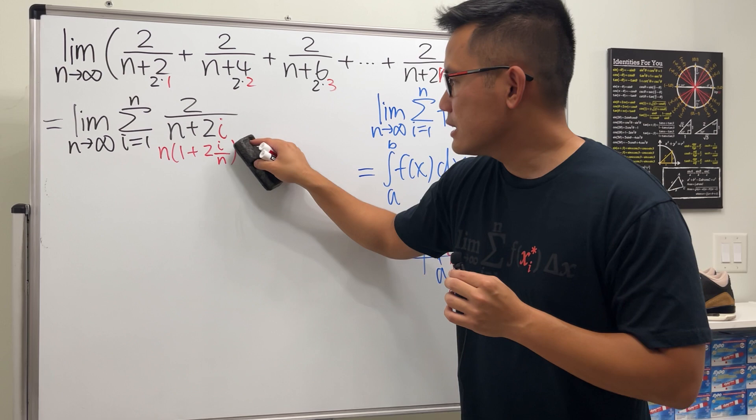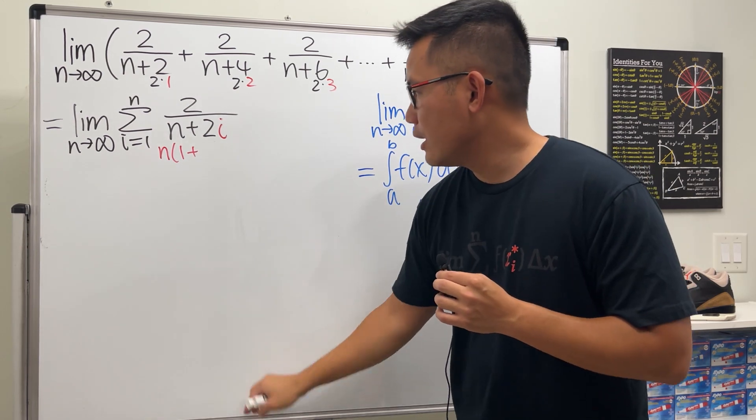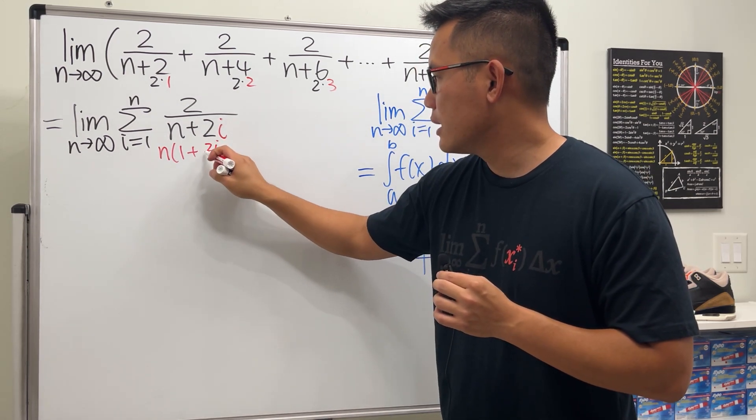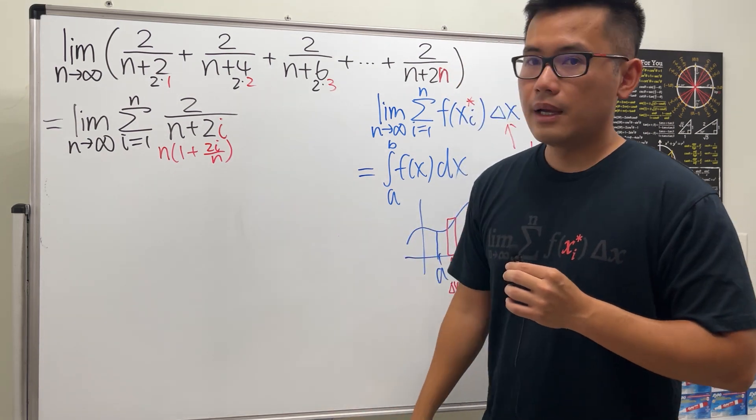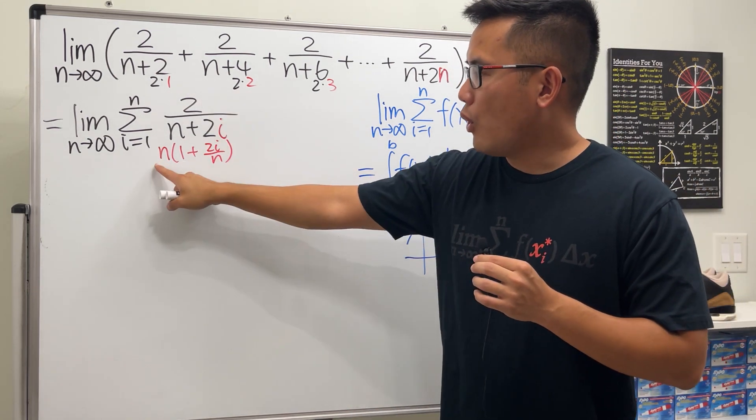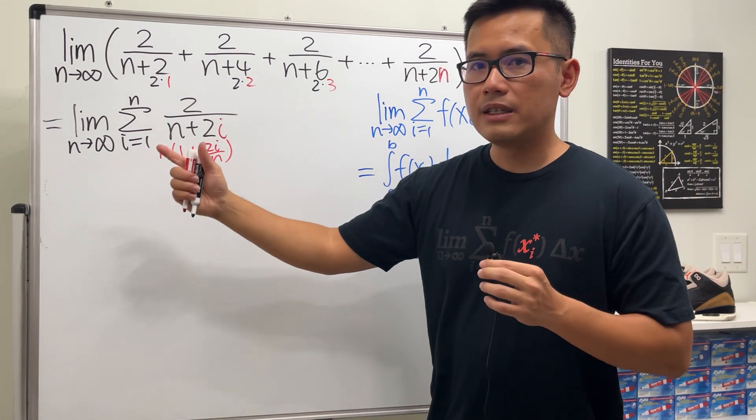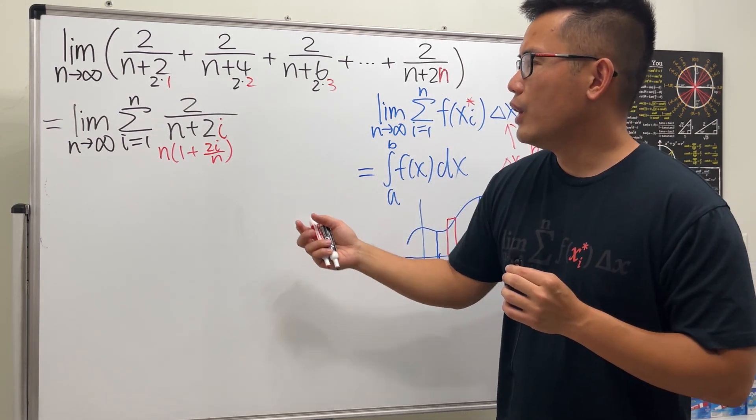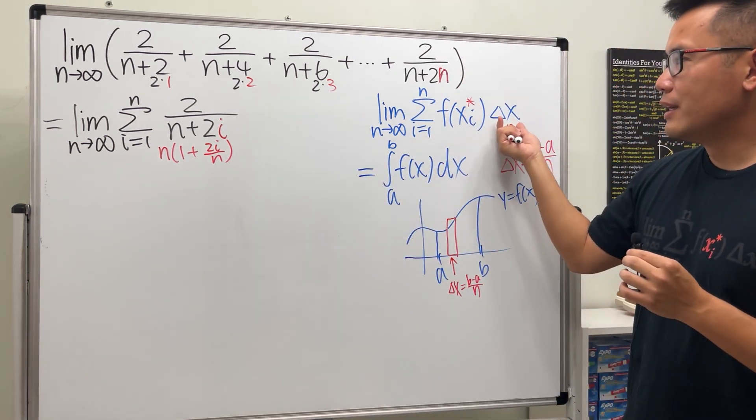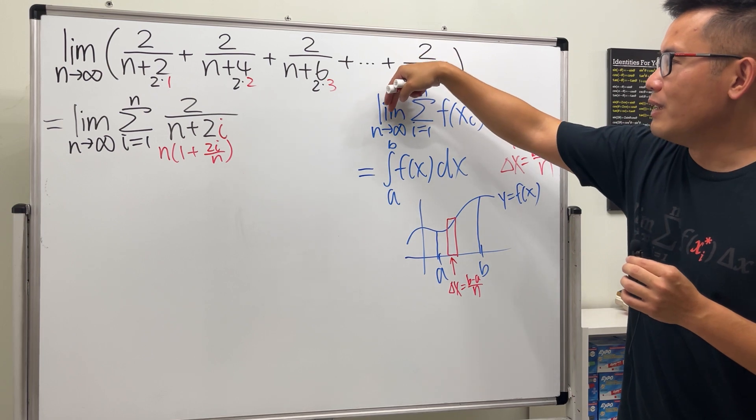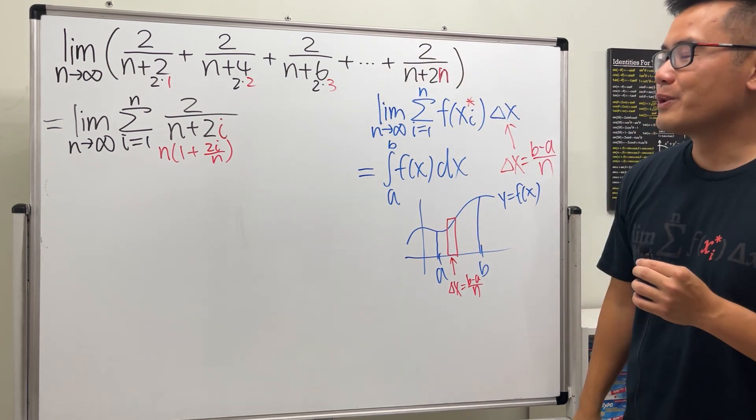Because it's kind of like we divide it by the n right here. We factor out the n. And perhaps, let's put this as 2i over n. Now we have 2 over n. We can factor that. And usually when we are doing this kind of question, we like to put the delta x in between the limit and also the sigma.